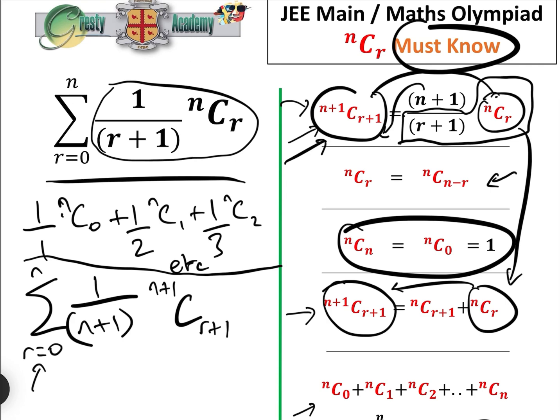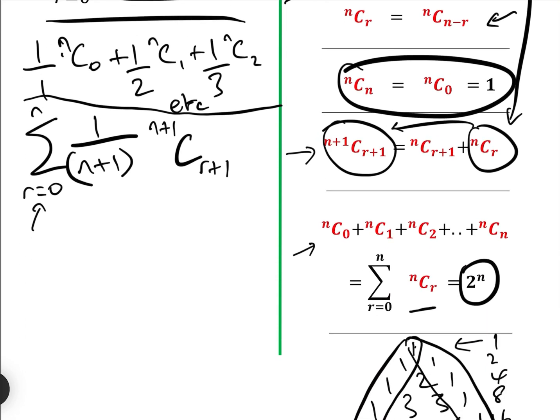Now, because we are summing over r, we can take 1 over n plus 1 out, because 1 over n plus 1 is a constant. And we're left with 1 over n plus 1, sum between r equals 0 and n of n plus 1 choose r plus 1.